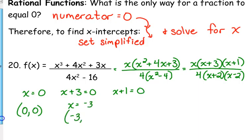Negative 3, 0 is an x-intercept, and negative 1, 0 is an x-intercept.